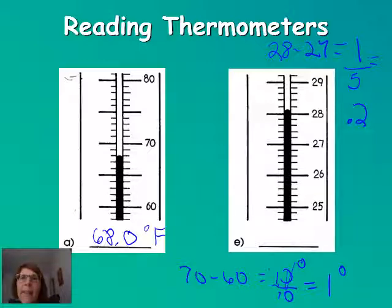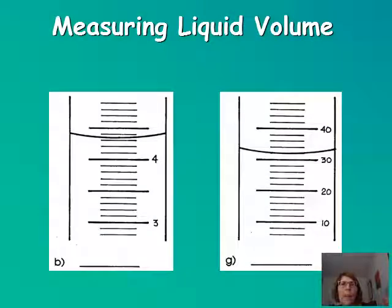So right here, this is 28. This is 28.2. So we're halfway between the 28 and the 28.2. So I'd say it's 28.1. I'm going to say it's Celsius because it's a lower scale.